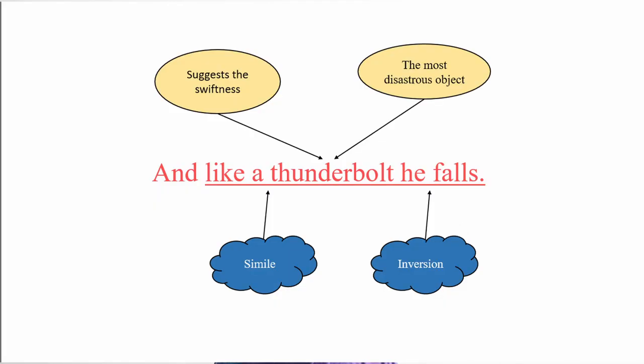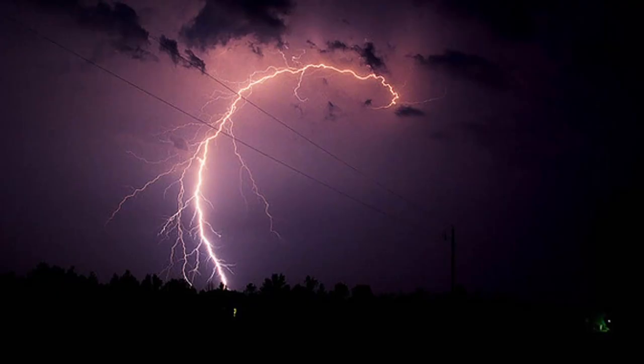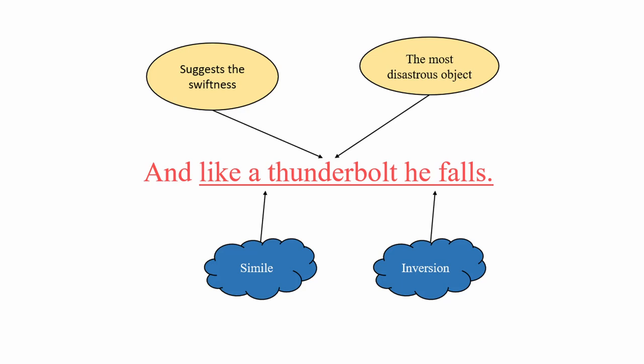The last line: 'And like a thunderbolt he falls.' A thunderbolt is the most disastrous object created by nature. It is really swift in action — quick in movement — within a split of a second. The thunderbolt suggests both swiftness and disastrousness, which applies perfectly to the eagle's dive.